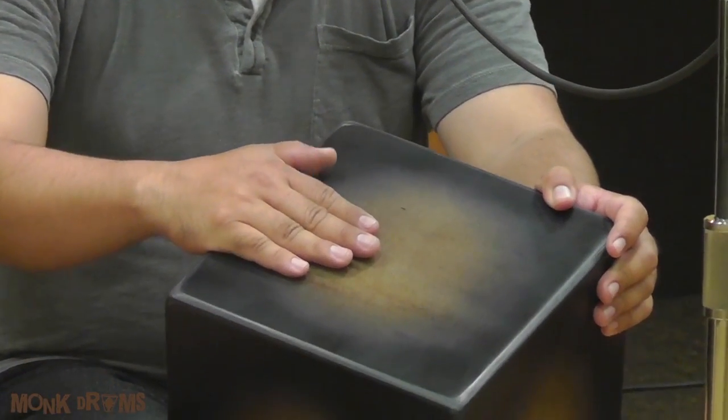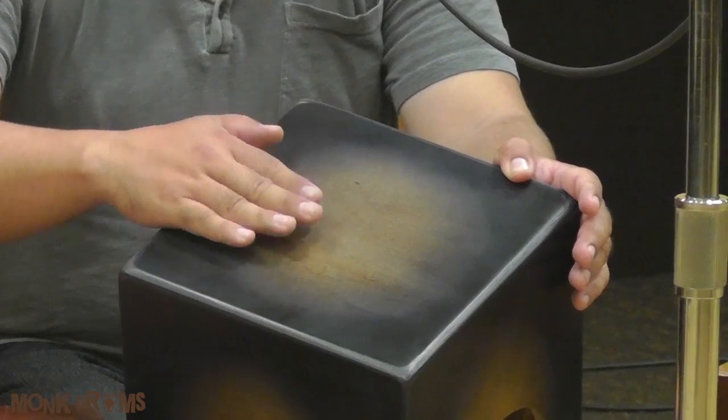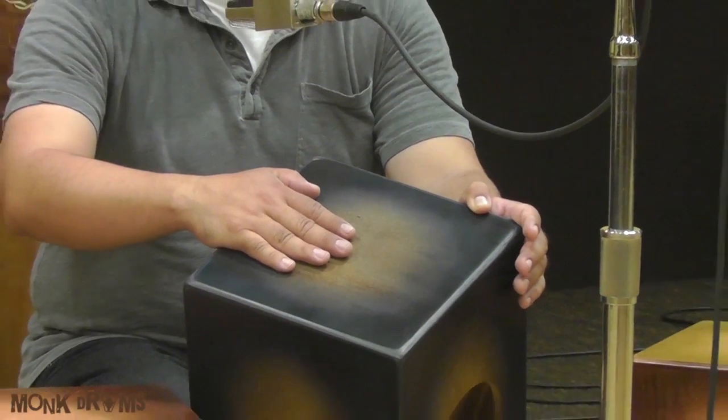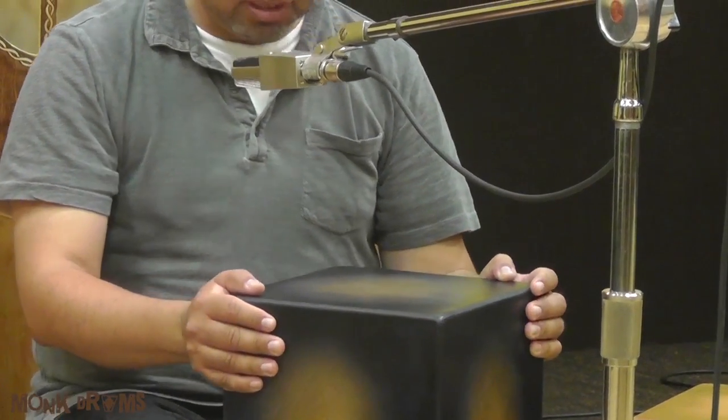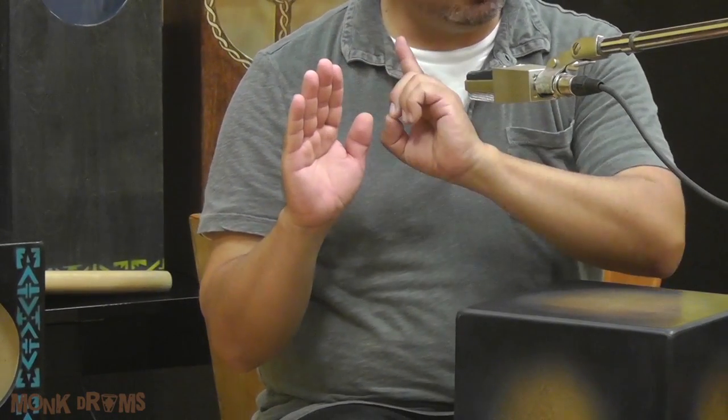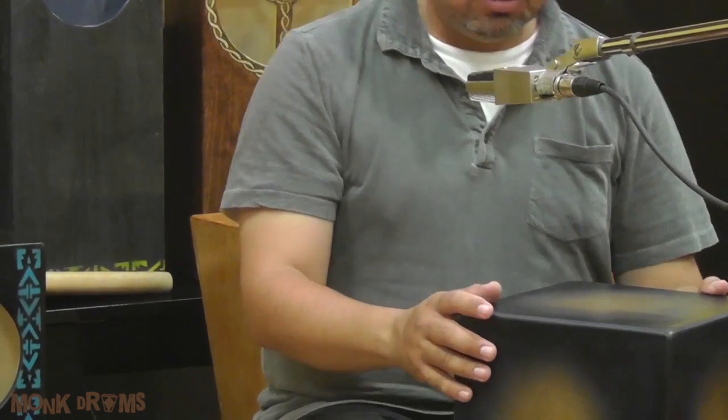If you look—I'm going to tilt down towards the camera—you can kind of see that I'm making the same placement here that I would have on an open tone. It's the same placement except that I'm going to leave the hand on the drum and put a little bit more emphasis on the finger pads here up in the front. That's what creates that high pitch slap that we get.